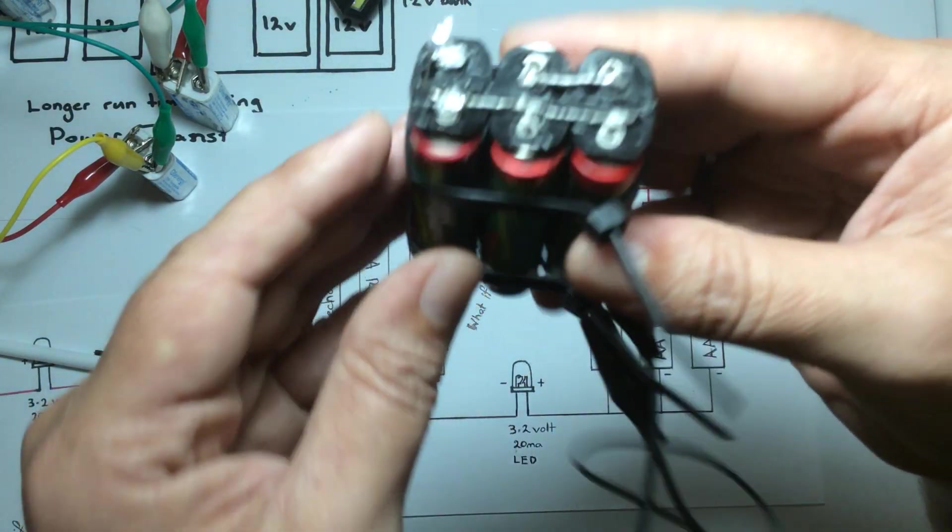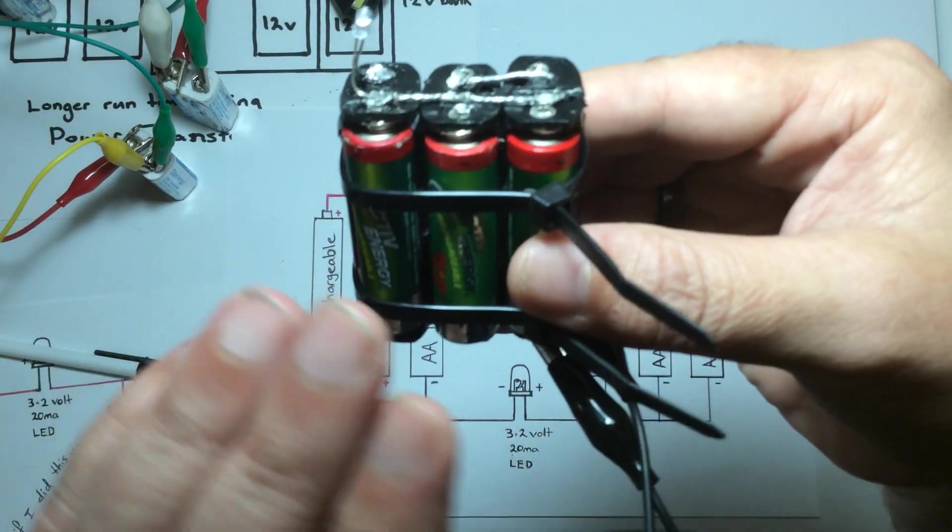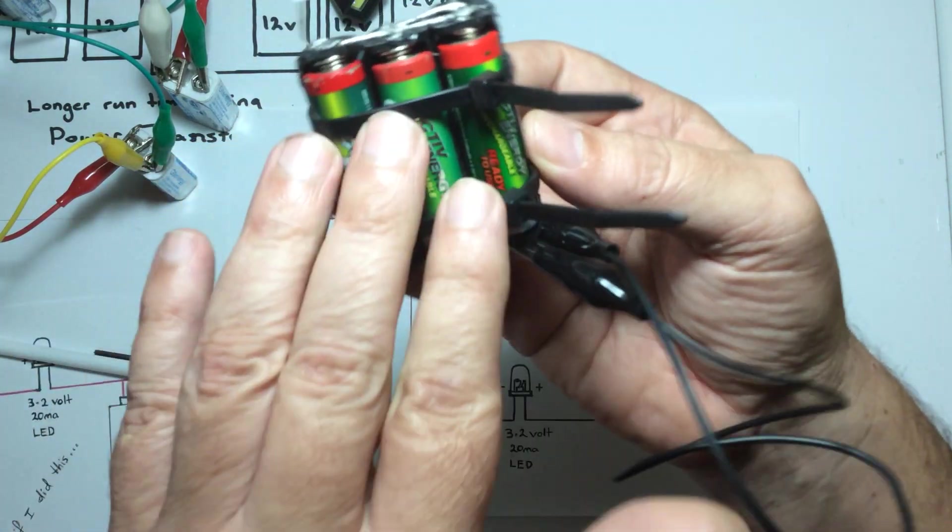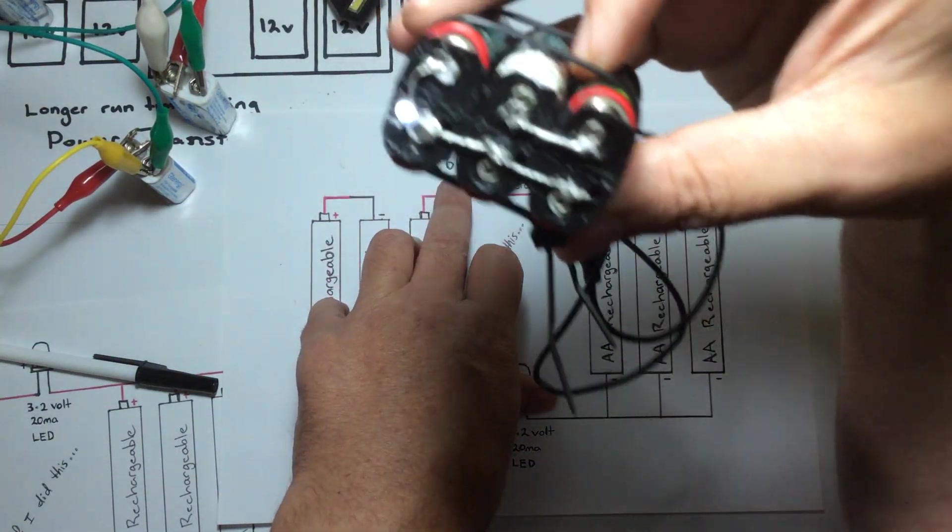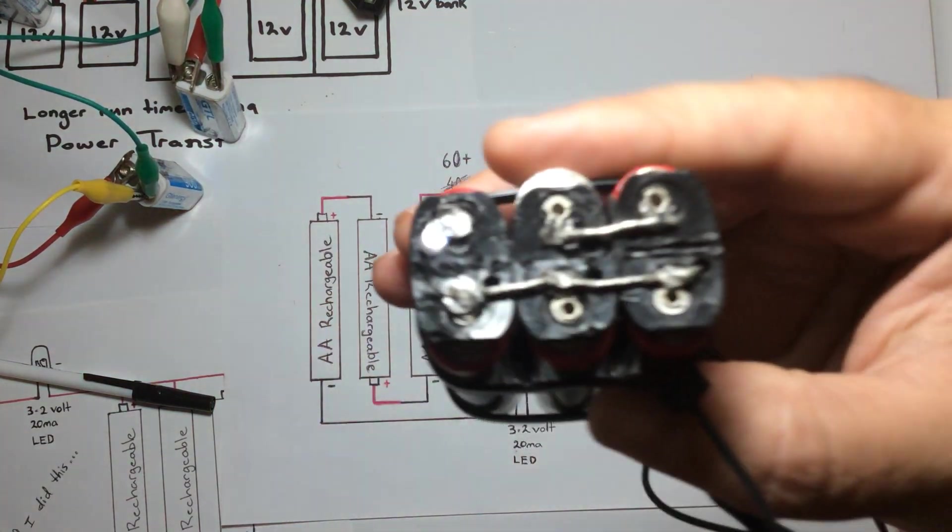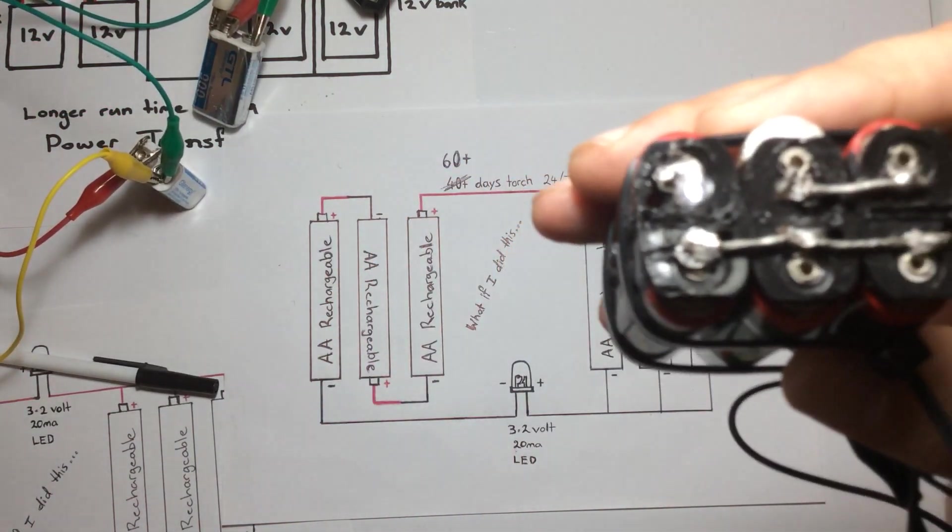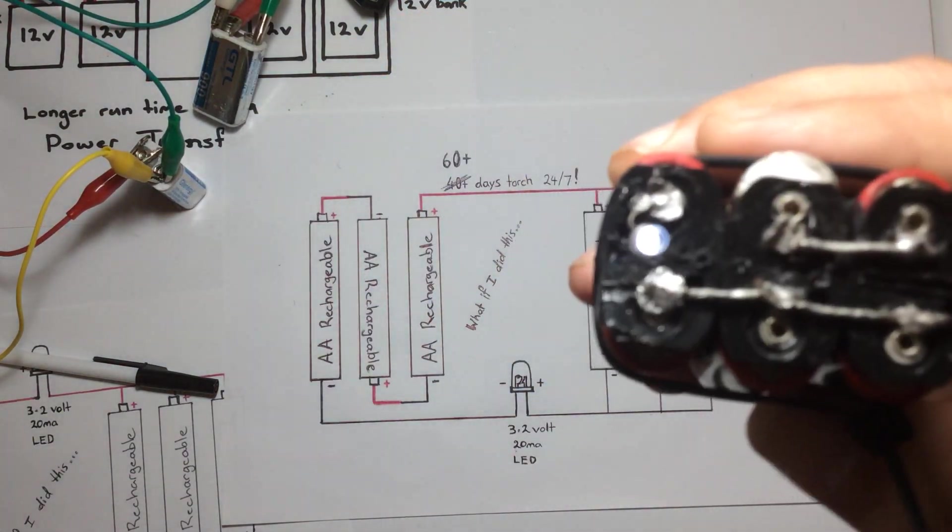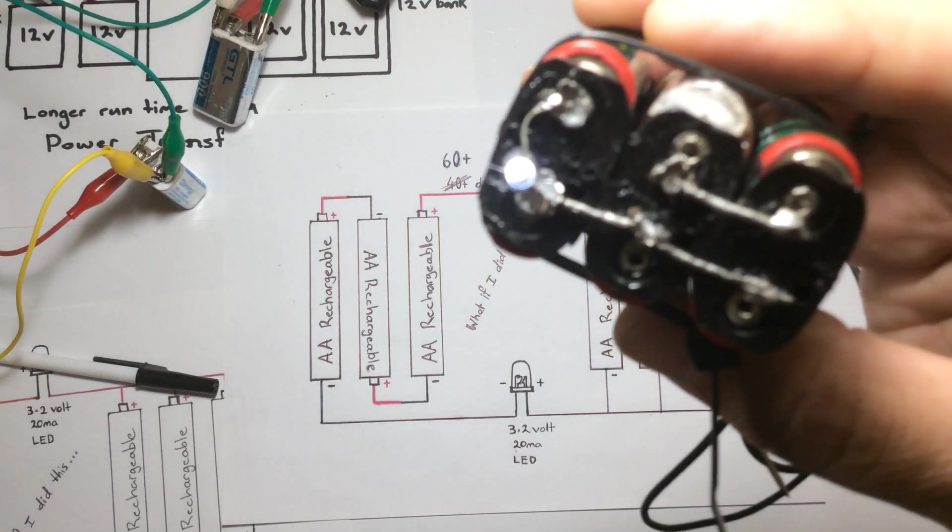Initially it was 40 days at which point I felt it was probably about a similar brightness and I decided that was time to call it, so I swapped the batteries in this system. At the 40-day mark I took these batteries and put them in this position and vice versa. Now we're another 20 days on from that.